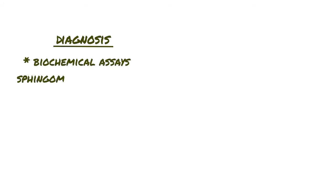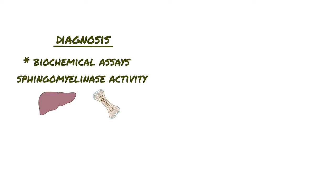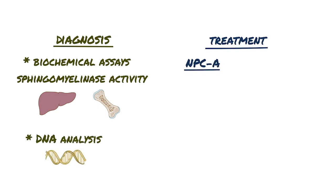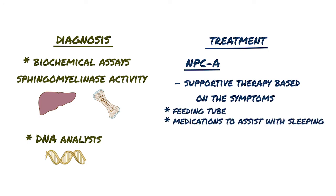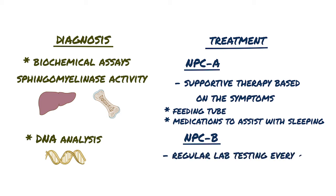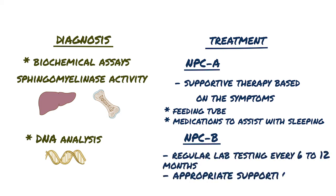The diagnosis is established by biochemical assays for sphingomyelinase activity in liver or bone marrow biopsy. Individuals affected with types A and B, as well as carriers, can be detected by DNA analysis. Treatment of type A includes supportive therapy based on symptoms, which may include a feeding tube and medications to assist with sleeping. Type B requires regular lab testing every 6 to 12 months and appropriate supportive treatment for whichever manifestations develop.